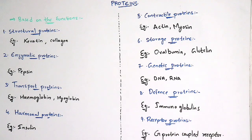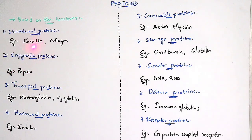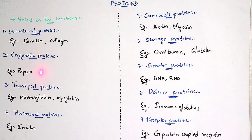Coming to structural proteins, the best examples are keratin and collagen. You must write examples. For enzymatic proteins, the best example is pepsin — you can also write trypsin. These enzymatic proteins mainly play a major role in the process of digestion; all digestive enzymes consist of enzymatic proteins.